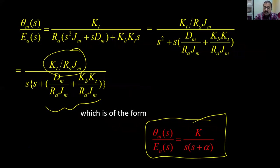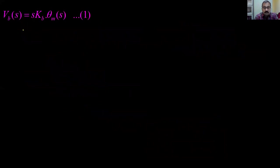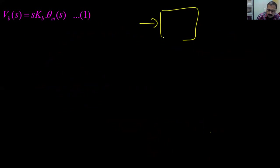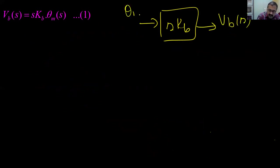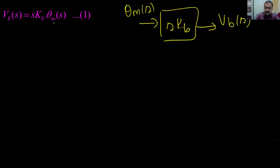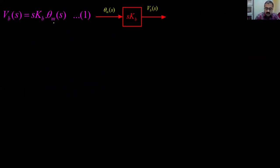Now let us draw the block diagram. For Vb(s) = s·Kb·θm(s), the block has gain s·Kb, with input θm(s) and output Vb(s).